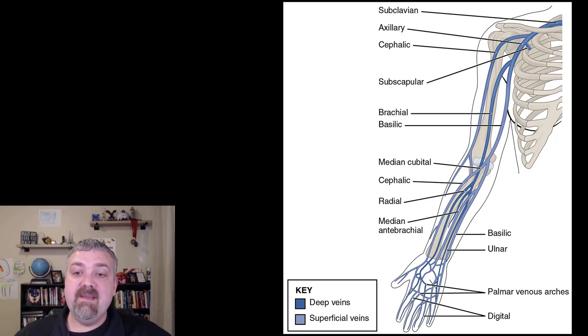Now we're down into the elbow. You see the median cubital vein. This is one that I always ask about on identification quizzes because this is the primary vein where you're going to get blood if you're drawing blood from someone. You don't have to use this one, but that's where you aim. That's the median cubital vein.